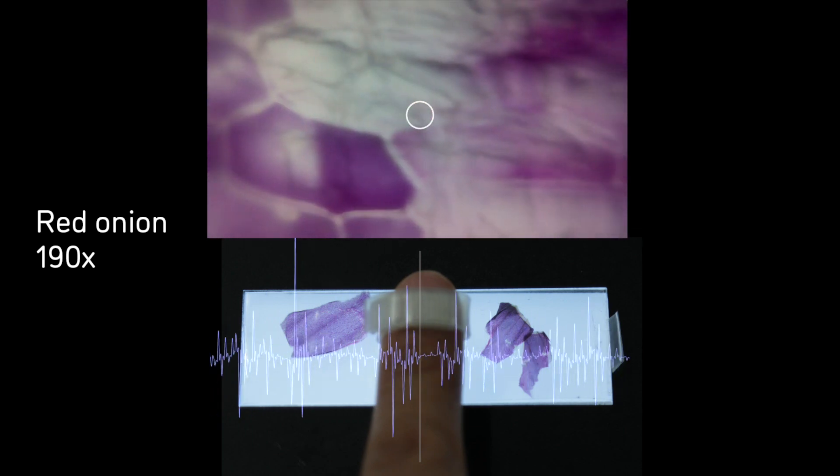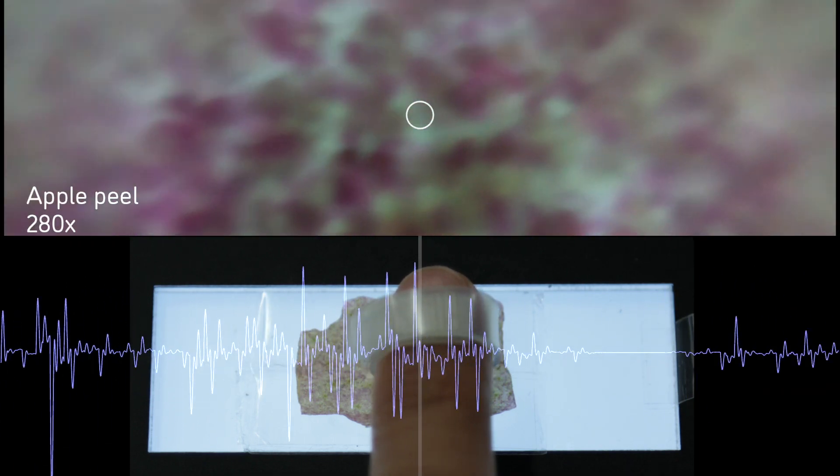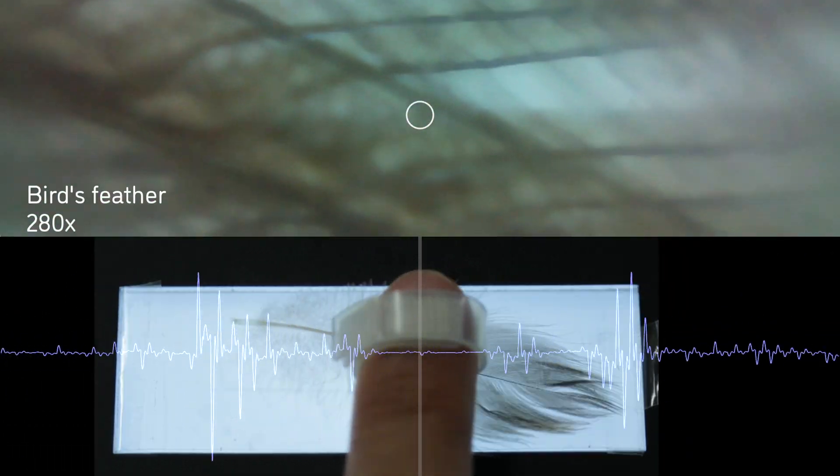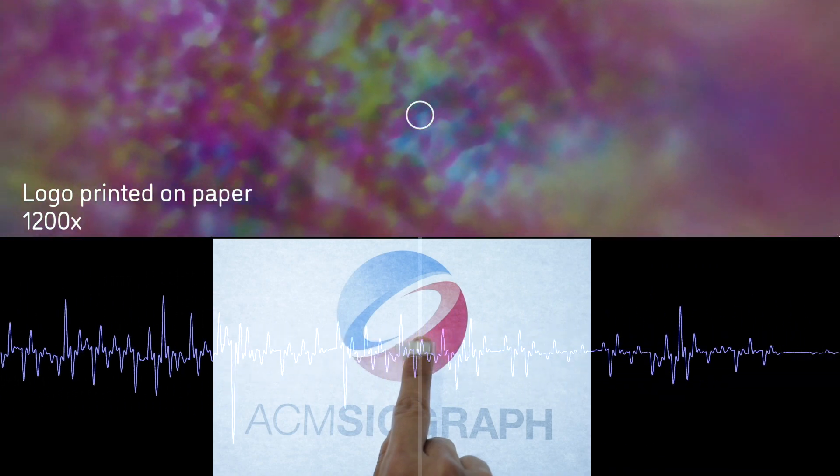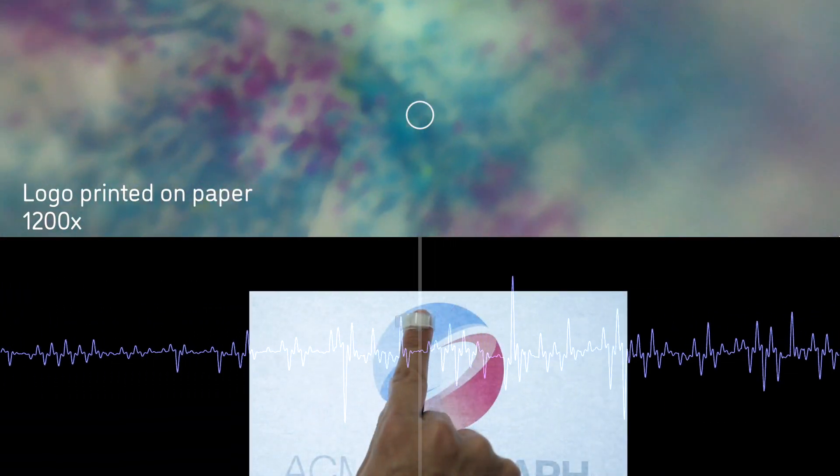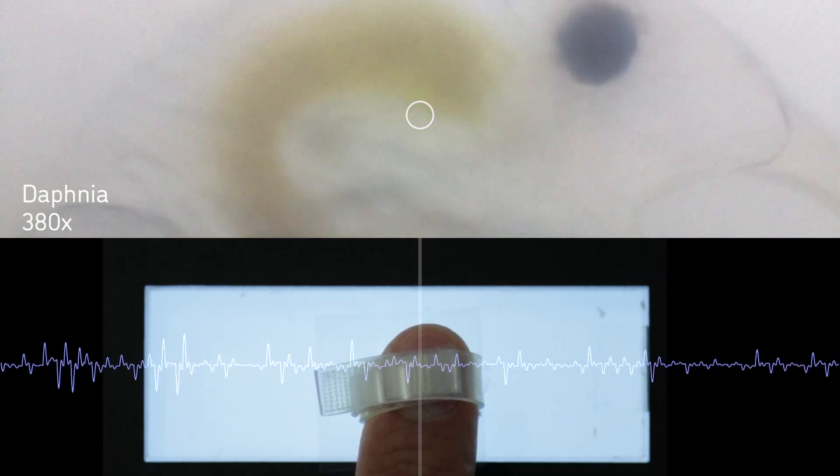Magnifinger provides the user with both active and passive tactile experiences. In the active tactile scenario, the tactile feedback is presented according to the movement of the finger. Magnifinger also provides passive touch experiences where the user can feel the micro-movements from microbes.